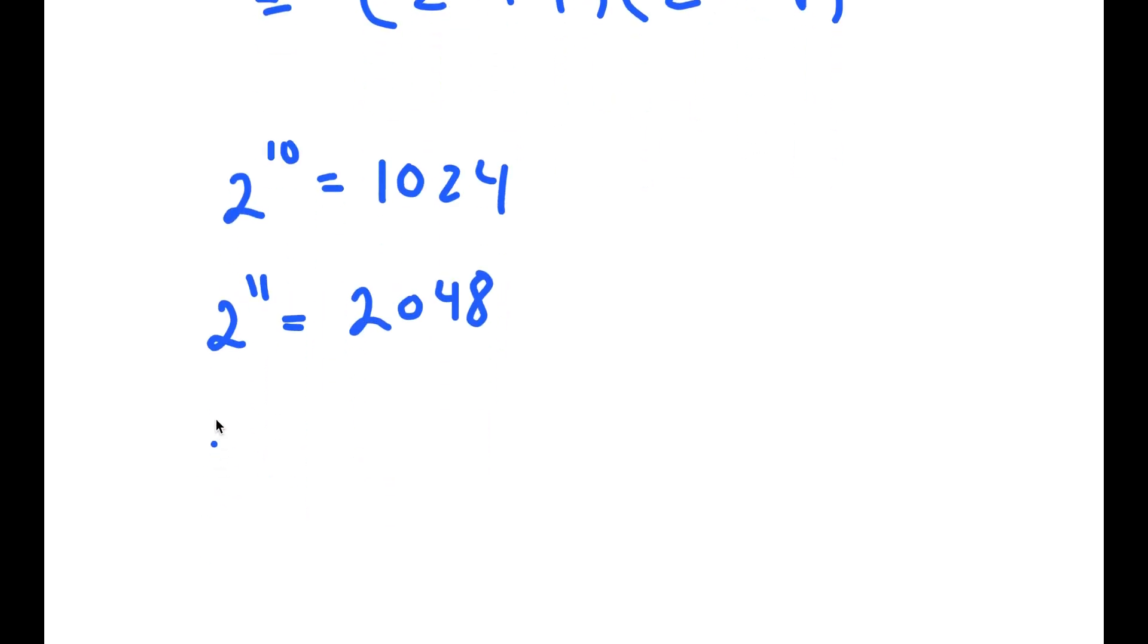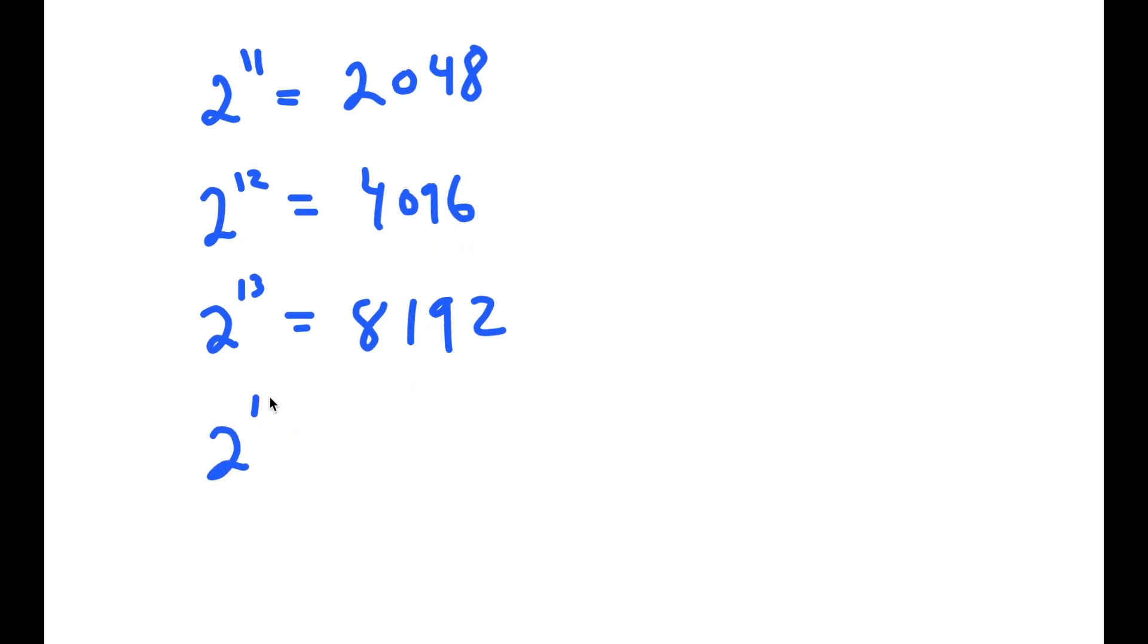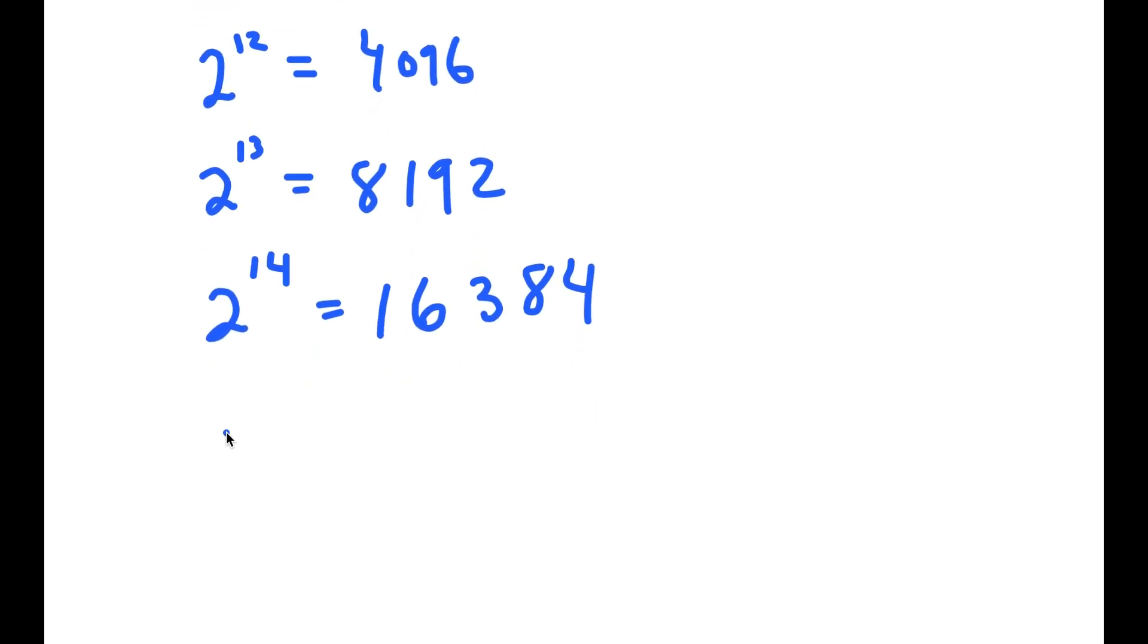2 to the power of 13 is double of 4096, which is 8192. 2 to the power of 14 is double of that, which is 16384. And finally, 2 to the power of 15, this is double of this, which is 32,768.